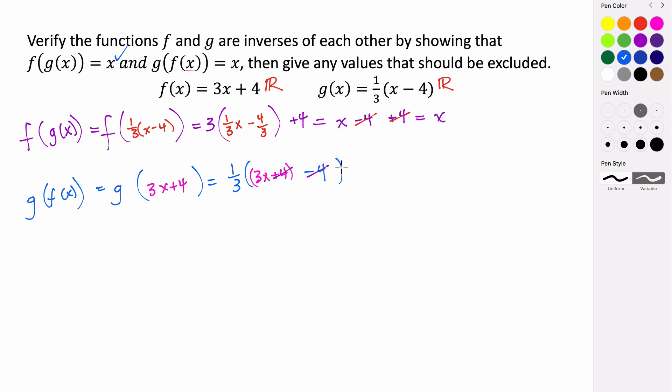We can see that this positive 4 and this negative 4, those are going to cancel. So we end up with one third times 3x. And then one third times 3x, that's just going to be x. Which we've then shown that g of f of x is also just x. So we have confirmed that this is in fact true.